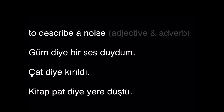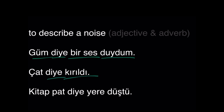Diye to describe a noise. Güm diye bir ses duydum — I heard a sound, a noise. Güm. Or maybe deep inside we think that noise is saying something. I heard a noise saying güm — like bam. Çat diye kırıldı — it was broken, like çat, like snap. Kitap pat diye yere düştü — the book fell to the ground, like pat. Describing a noise, saying pat. Doesn't say anything, but who knows.